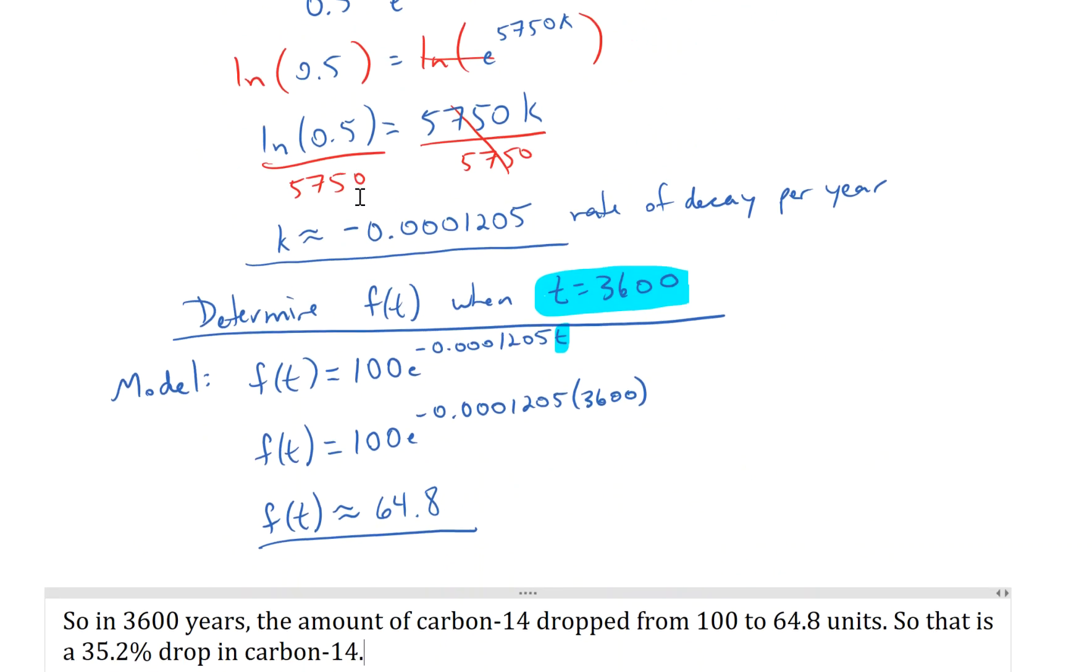And once we got a rate of decay, then we plugged in the t value that we wanted to determine the amount of Carbon-14 with the k value that we found and with the arbitrary 100 initial value to determine the amount of Carbon-14 at that moment in time. And finally, we could determine what percentage of a drop we had over that time period.